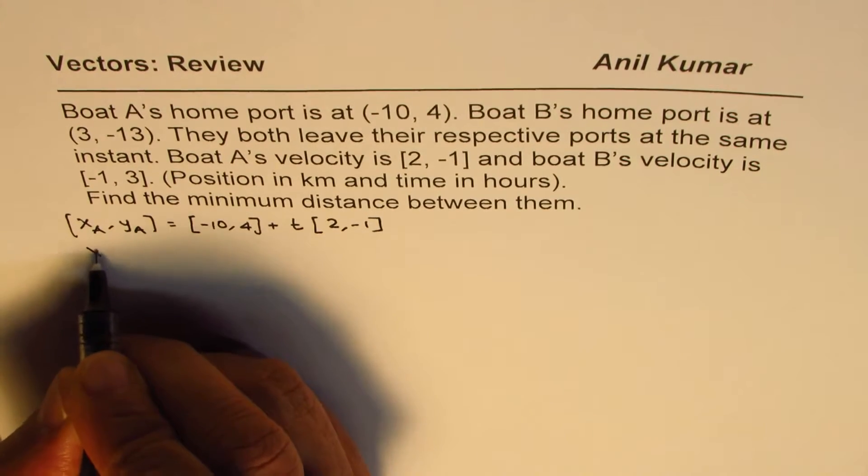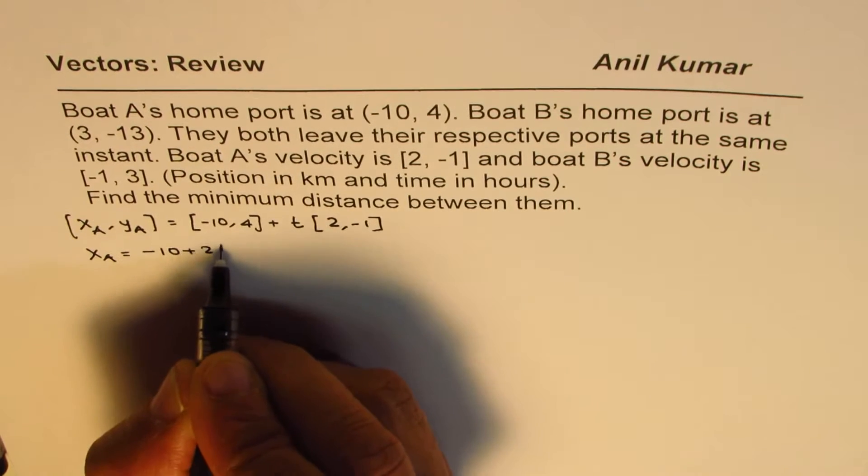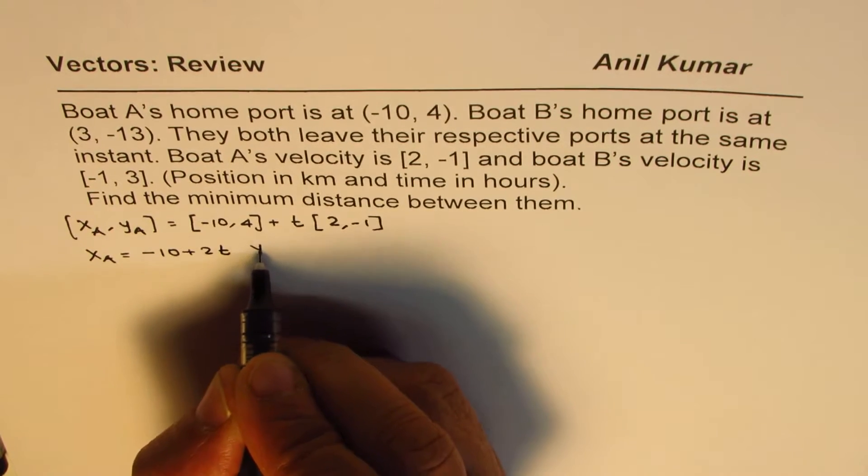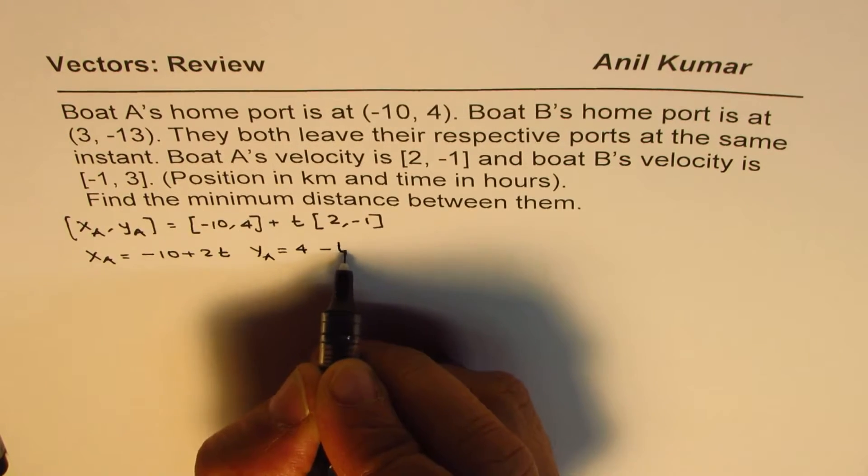From here you can write what xA is. xA equals -10 + 2t and yA equals 4 - t.